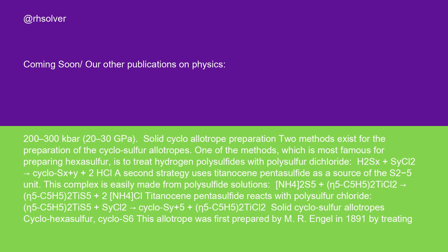Two methods exist for the preparation of the cyclo-sulfur allotropes. One method, most famous for preparing hexasulfur, is to treat hydrogen polysulfides with polysulfur dichloride: H2Sx + SCly → cyclo-Sx+y + 2 HCl. A second strategy uses titanocene pentasulfide as a source of the S5²⁻ unit.